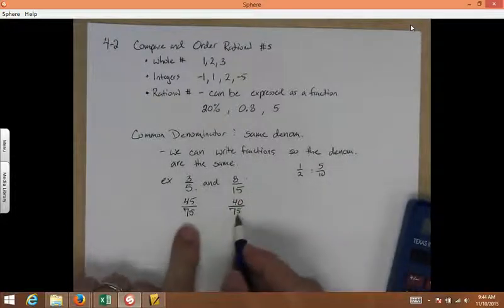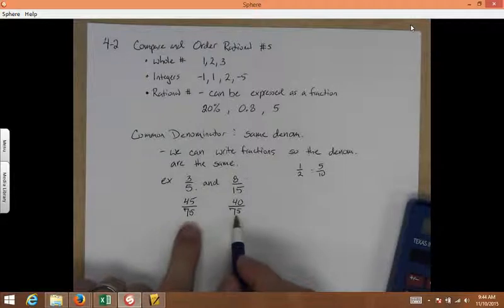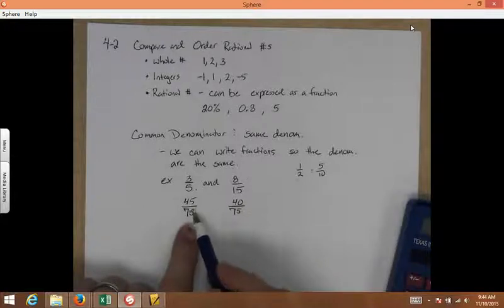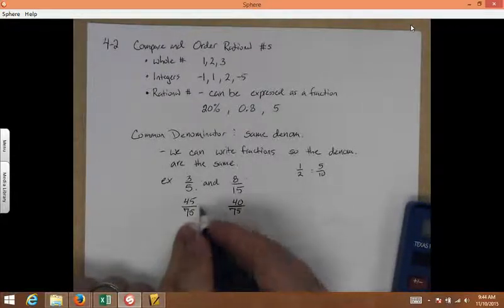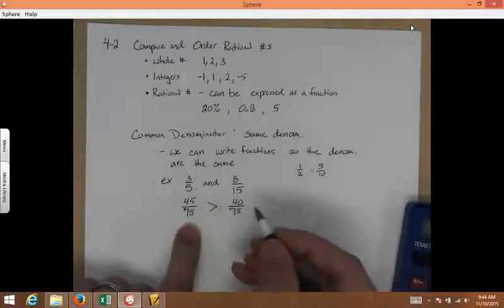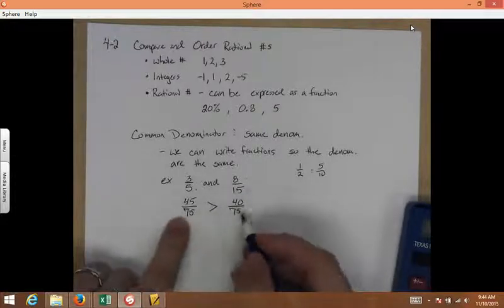So, now that I have these rewritten with the same denominators, I can easily compare it. Would I rather have 45 out of 75 slices of pizza or 40 out of 75? Would I rather have this? So, this is bigger. Now, that's with common denominators.